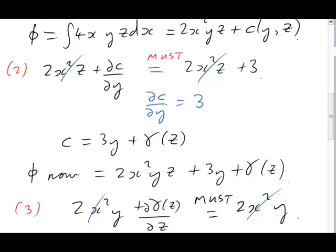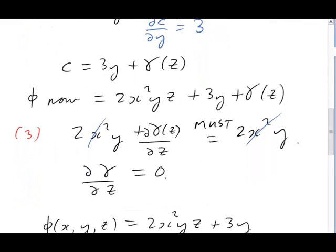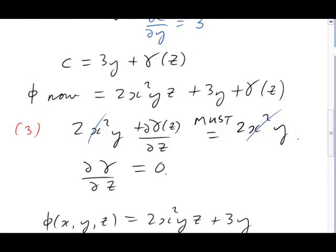That leaves us d gamma by dz equals 0. That means that gamma doesn't depend on z. Gamma really is now a constant. So we can throw it away. Because it's part of a potential, we don't care what the constant is. That allows us to write out our final version of phi: 2x squared yz plus 3y.